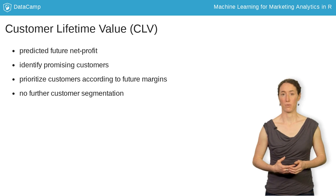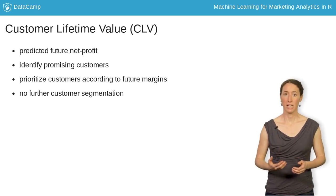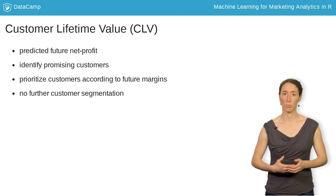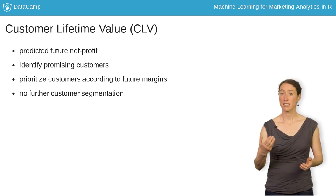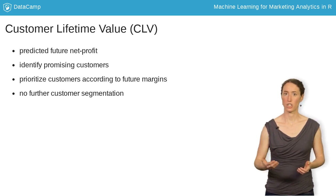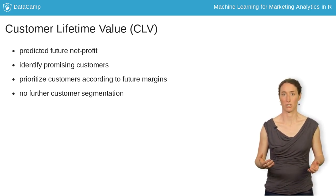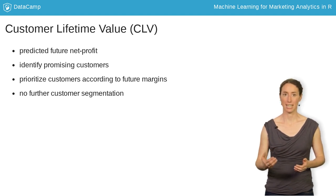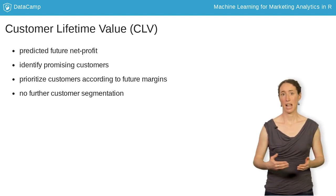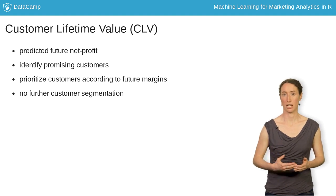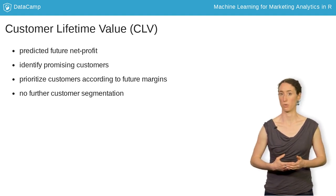The customer lifetime value, called CLV, describes the predicted future net profit accumulated by a company through its relationship with a customer. Since the CLV is a forecast, there are several challenges concerning its estimation. Once estimated, we are capable of identifying customers that are likely to generate higher net profits. Practically, this can help us to target or prioritize customers according to their future profits.